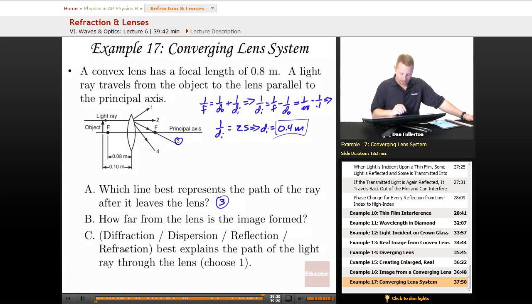Well, the path of the light through the lens, that's governed by refraction, the bending of light. That's why lenses work. So our best answer there is C, refraction.